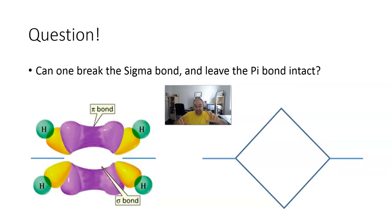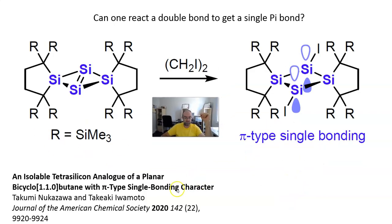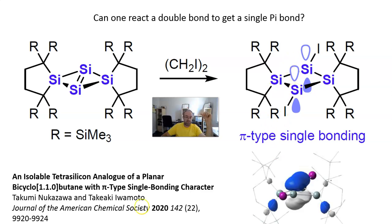Maybe a different formation of atoms will form something that can be called a single pi bond. And just recently, a group from Japan synthesized this molecule and reacted it. One bond broke, another one remained, and it actually looks exactly like this. Thank you.